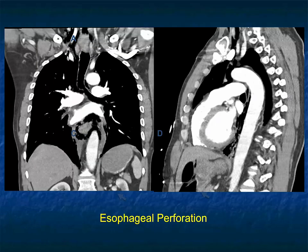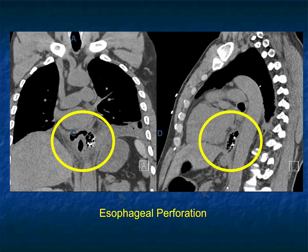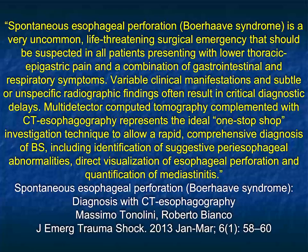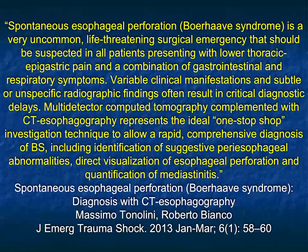When you see the air, you know there's a perforation. There are other reasons for air in the mediastinum — tracheal injuries, barotrauma, for example — but when you're thinking about the esophagus, seeing the air gives you the diagnosis, though the location can be more challenging. The initial study showed the air, but we couldn't exactly connect it to the esophagus; after the swallow, you see the positive contrast. People in the past would get esophagrams or swallow studies, but these days most people don't know how to do swallows, and in the ER setting everybody has a scanner and you can quickly make the diagnosis.